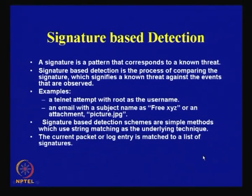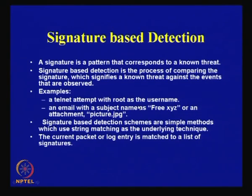There are various detection methods followed by IDPSs. One of the most primitive techniques is the signature-based intrusion detection system. A signature is essentially defined as a pattern that corresponds to a known threat. Signature-based detection is the process of comparing signatures — which signify a known threat — against observed events. Examples include a login attempt made with root as username. The current packet or log entry is matched against a list of signatures, and if the match is found, those packets are blocked.